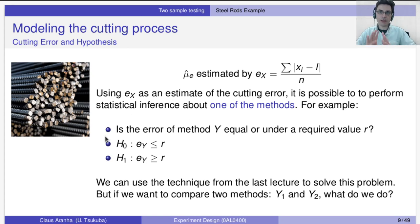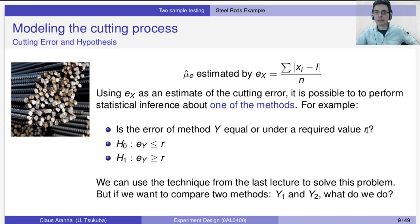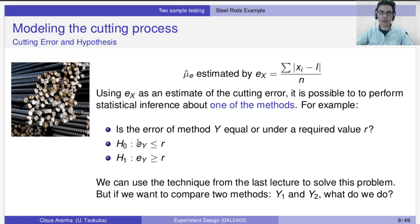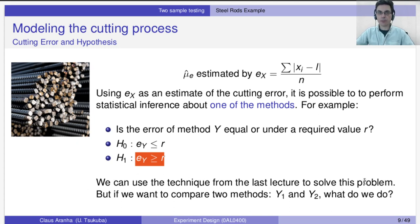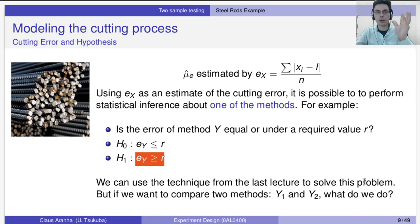If we were analyzing only one method as in last class, we could do a hypothesis test like: is the error of method Y equal to or under a required value R? For example, we could test that the mean error is less than 10 centimeters, with the null hypothesis being the error is less than 10 centimeters and the alternate hypothesis that the error exceeds 10 centimeters. We could use the technique from the last lecture. But what if we want to compare the new method with the old one? It's not one method versus a fixed value — both methods have errors.